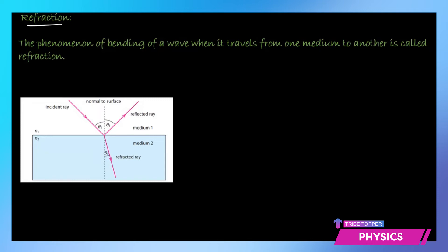Then what happens? The ray bends. As you can see here, the ray is bending when it enters. This is the incident ray; theta 1 is the angle of incidence and theta 2 is the angle of refraction. The ray that is bent is called the refracted ray. Refraction is the phenomenon of bending of a wave when it travels from one medium to another medium.